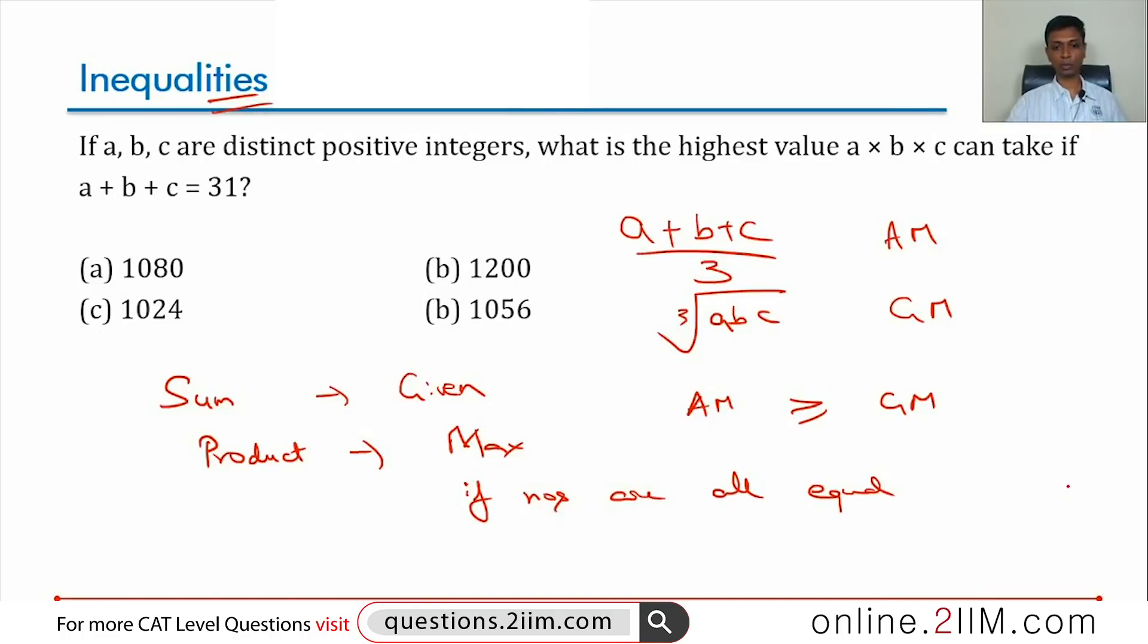So, A plus B plus C is 31. If all numbers are equal, then we can say that the product ABC will be maximum. They cannot all be equal. 31 by 3 is 10 point something. We are looking for positive integers, so they cannot all be equal. Further, we are looking for distinct positive integers.